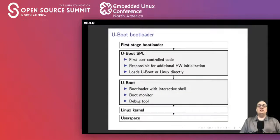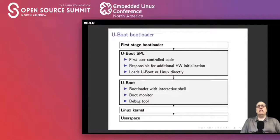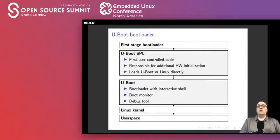The next is the first user-controlled bootloader. It is usually in several parts as well. It is fairly common to have the first part be what's called the SPL, or Secondary Program Loader. In the case of uBoot, this is a cut-down version of uBoot that initializes the rest of the hardware so it can then load a more full-featured version of uBoot, which would then load the Linux kernel. Beyond the SPL, uBoot brings other features such as an interactive shell, boot monitor, debugging tools, and the ability to test hardware.